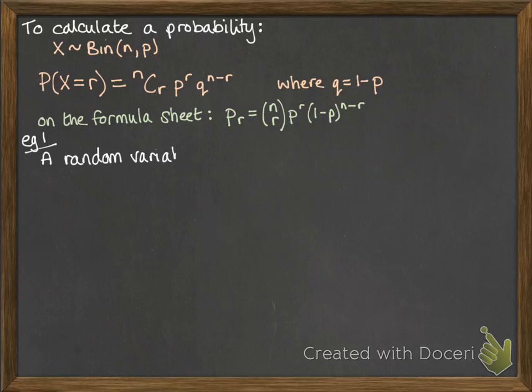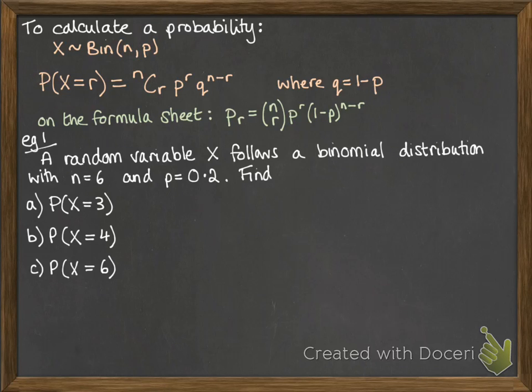So example number one. We've got a random variable x that follows binomial distribution with n equals 6 and p equals 0.2. So we can write that down like this. We're going to find the probability that x equals 3. So we are doing 6 trials. We want to work out the probability that 3 of them are successful. So put that into the formula. n is 6, r is 3. So we've got 6 choose 3. Probability of success is 0.2, so that's 0.2 to the power of 3. So the probability of failure will be 0.8, also to the power of 3 because 6 minus 3 is 3. Pop it into your calculator for your answer.